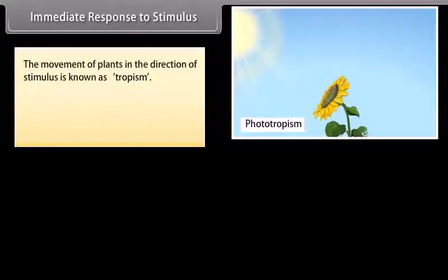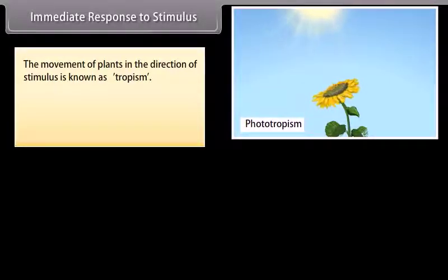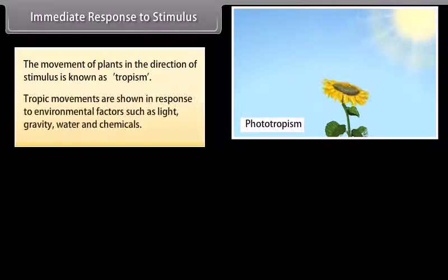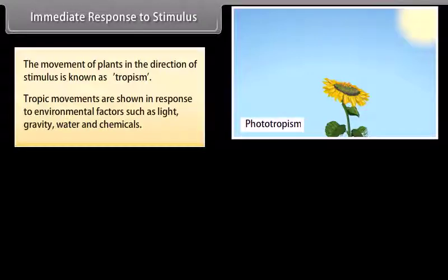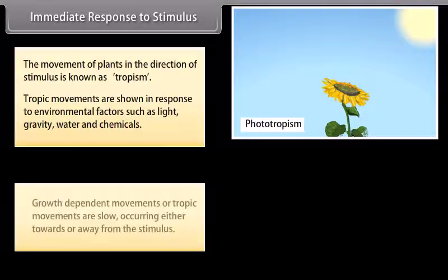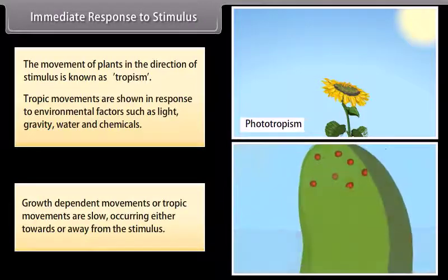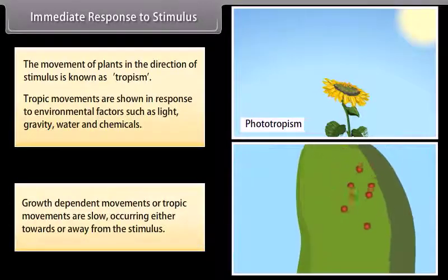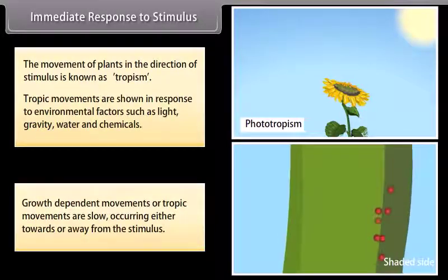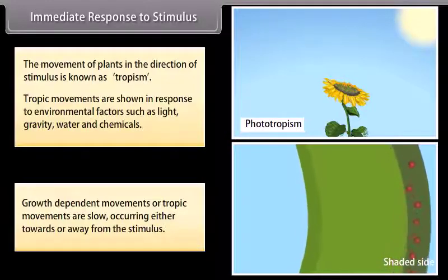Immediate response to stimulus: the movement of plants in the direction of stimulus is known as tropism. Tropic movements are shown in response to environmental factors such as light, gravity, water, and chemicals. Growth dependent movements or tropic movements are slow, occurring either towards or away from the stimulus.